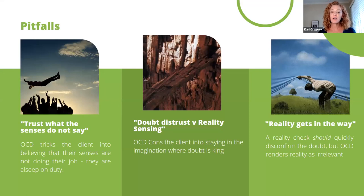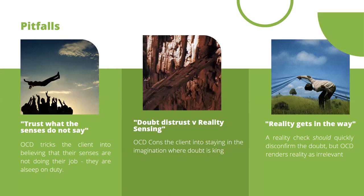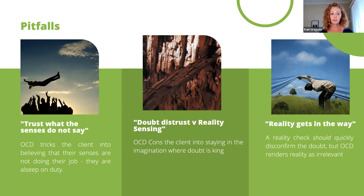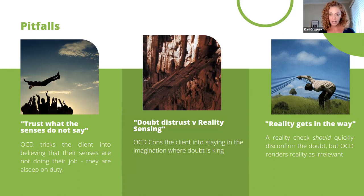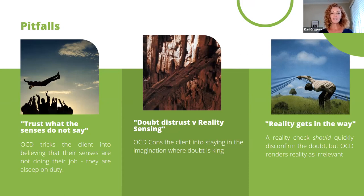These are pitfalls outlined in the chapter where people can get stuck with reality sensing. First: trust what the senses do not say. OCD tricks the client into believing their senses are not doing their job — like they just didn't see correctly. But I'm currently not hearing water running, so I can trust my senses that I'm not flooding the bathroom. I can see my driveway from my window, so I can trust that nobody stole my car — using senses appropriately, not assuming I just didn't see or hear it correctly.